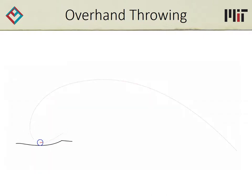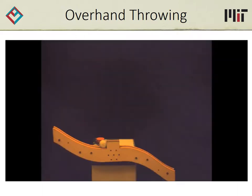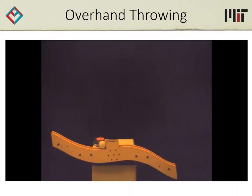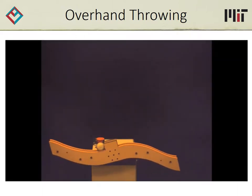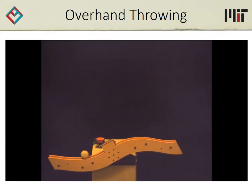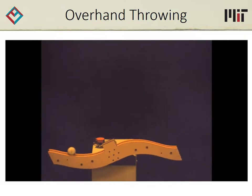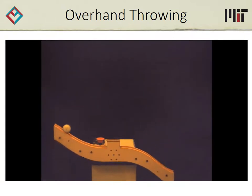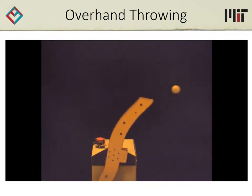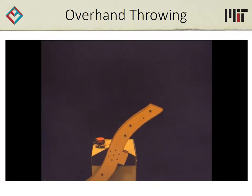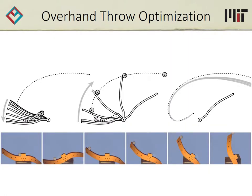Time for overhand throwing. Here is the simulation, and here is the throwing arm in action. The shape and motion of the arm generated by the optimization framework seems pretty intuitive. Once again, the measured and predicted trajectory of the ball aligned fairly well.